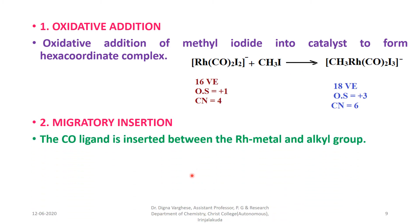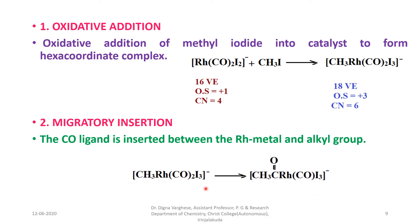The second step is the migratory insertion reaction. The carbon monoxide ligand is inserted between the rhodium metal and the alkyl group. In the hexacoordinate complex, one of the carbonyl groups undergoes migratory insertion between the rhodium and the methyl group, forming a complex with a lower coordination number than the parent complex. It is an 18-valence-electron species; after insertion, it is converted into a 16-valence-electron species, meaning it is a coordinatively unsaturated species.